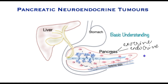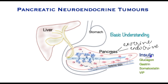The hormones produced here include insulin and several others with very specific functions. Glucagon will reverse the action of insulin. Gastrin increases acid production. Somatostatin has action on the gut including the pancreas by reducing secretions. And VIP is a condition associated with significant diarrhea.